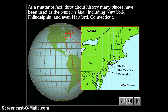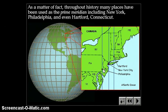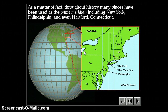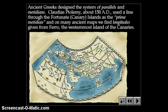In fact, many different places have called their own location the position of the prime meridian throughout history. In the United States, it has been drawn through New York, Philadelphia, and even Hartford, Connecticut. You can imagine that gets really complicated — if this is zero on one map and a different line is zero on another map, not only do you need to know the degrees, but you also have to know which prime meridian you're measuring from.